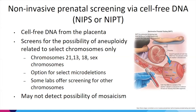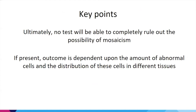A couple of key points: ultimately no test will completely rule out this possibility. If present, outcome depends on the proportion of abnormal cells and their distribution across different tissues. Postnatally, identifiable chromosomal mosaicism is typically associated with physical findings or developmental delay, though this is subject to ascertainment bias — people who get genetic testing tend to have a medical indication. Importantly, mosaicism has also been identified in individuals with no known symptoms, making prediction of impact very challenging.